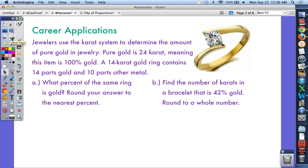Let's try this jewelry example. Jewelers use the carat system to determine the amount of pure gold in jewelry. Pure gold is 24 carats, meaning 100% gold. So the whole part is 24. A 14 carat gold ring will be 14 parts gold and 10 parts other metal. What percent of this ring, if it's 14 gold and 10 other metal, is gold? I want to find the percent—that's what I don't know. 14 is the part out of the whole, which is 24 carats.